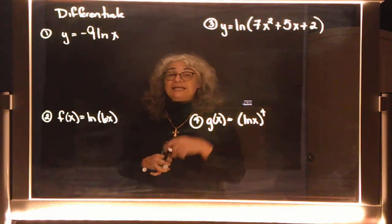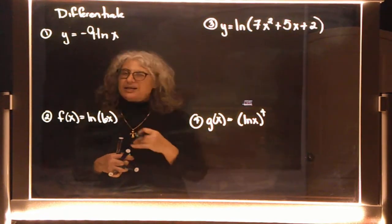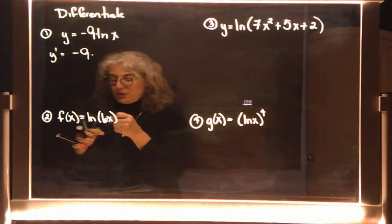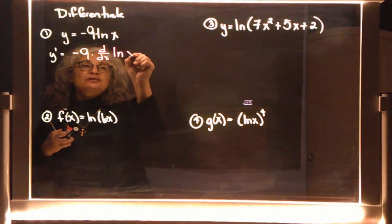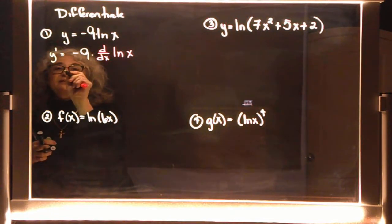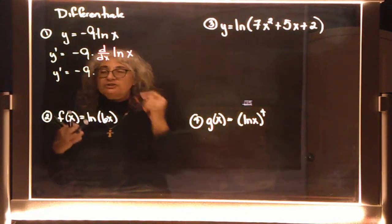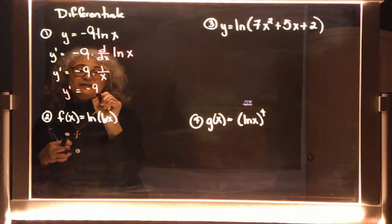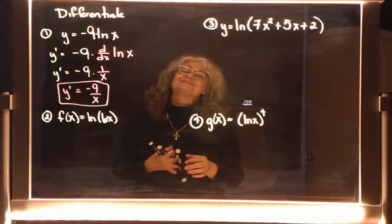We have y equals negative 9 times the natural log of x. When we have this multiplication problem with a constant, the constant just hangs out front. So to find this derivative, we're doing negative 9 multiplied by the derivative of the natural log of x. Theorem 6 says that's 1 over x, so the derivative equals negative 9 over x. It's that simple — don't read too much into it.